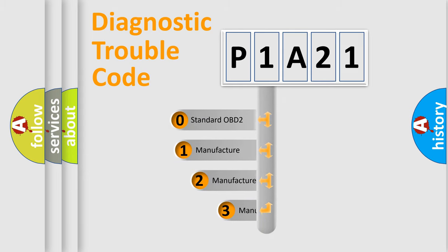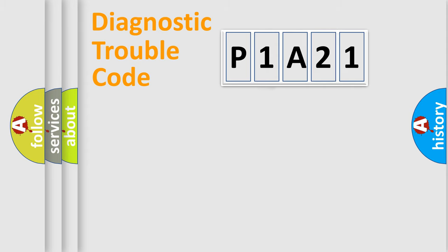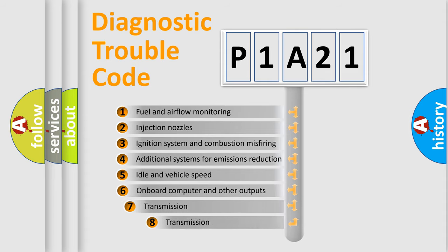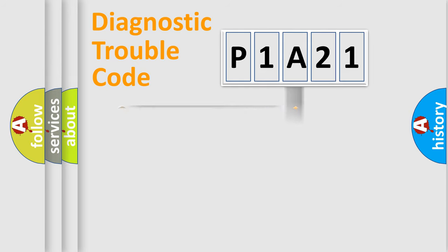If the second character is expressed as zero, it is a standardized error. In the case of numbers 1, 2, 3, it is a manufacturer-specific expression of the car-specific error. The third character specifies a subset of errors. The distribution shown is valid only for the standardized DTC code.